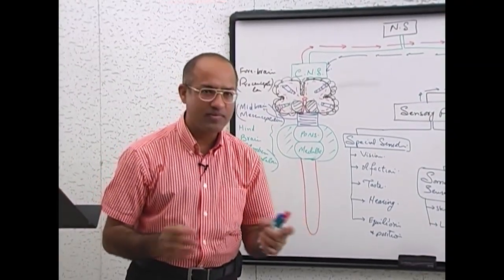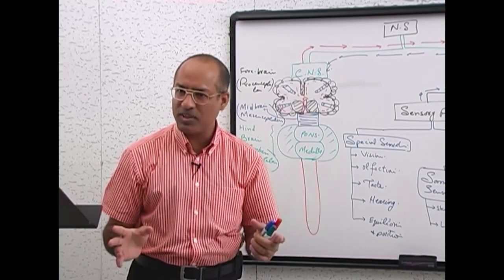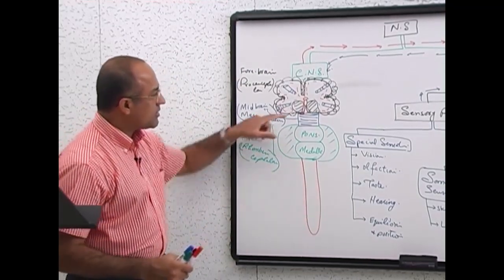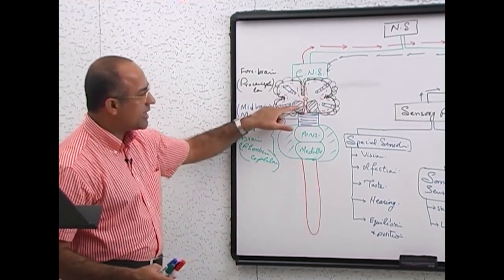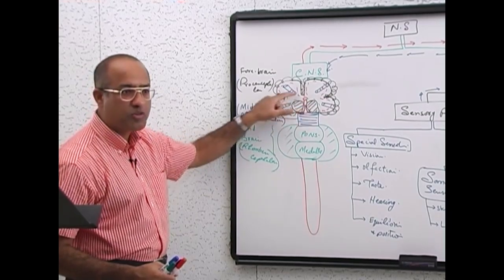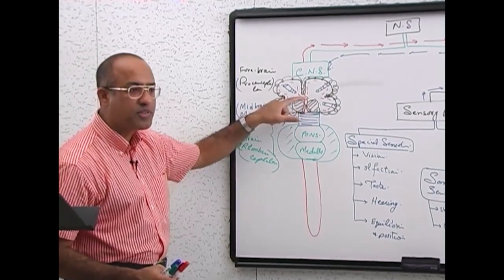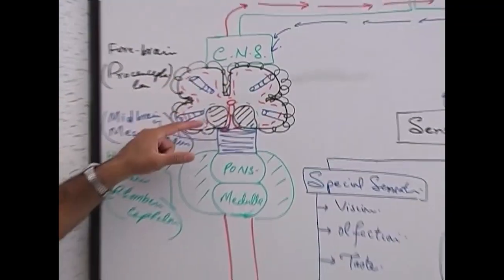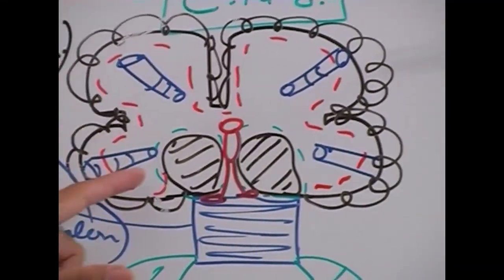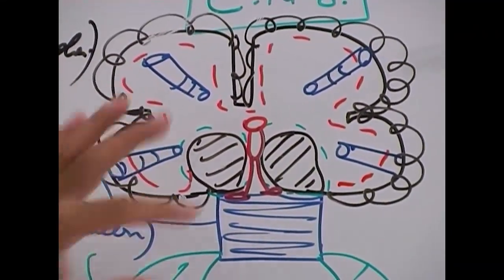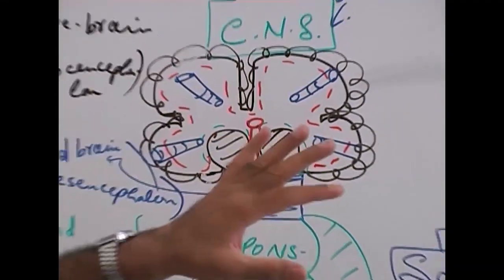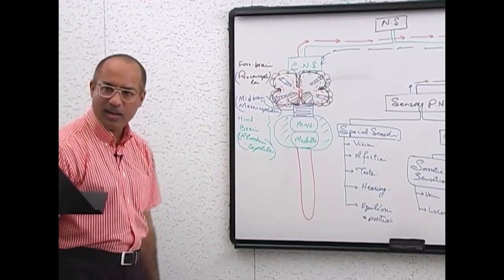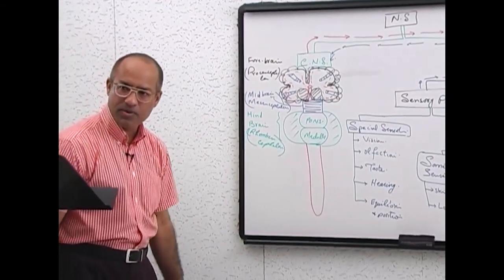Am I clear? Any questions up to this? Let me repeat: diencephalon is the deepest part of the cerebral hemisphere, and telencephalon is the outer part. But both of them together are called prosencephalon. Am I clear to everyone?